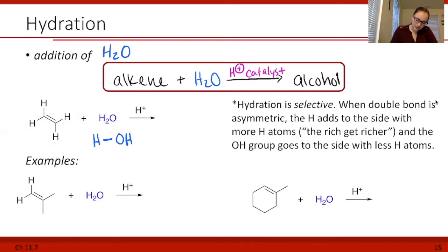If I draw out my same molecule, we're going to add water across the molecule. The hydrogen is going to add to one side of the alkene, and the OH is going to add to the other. So we're splitting the water in half and putting half of it on one side, half of it on the other.